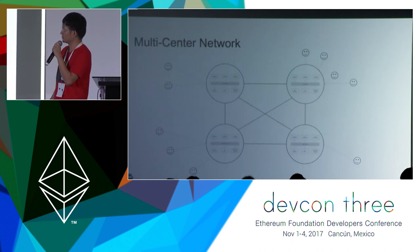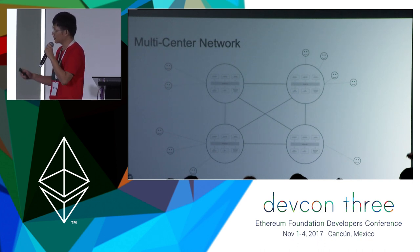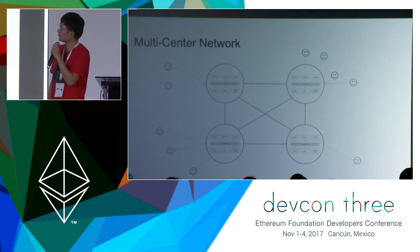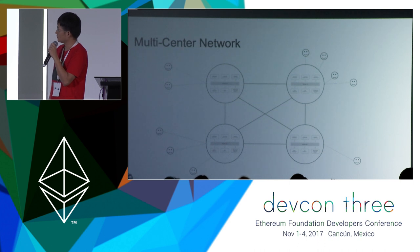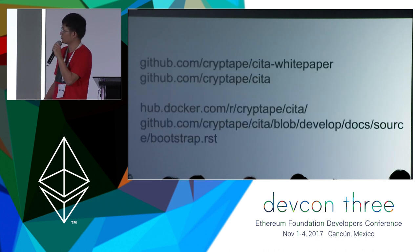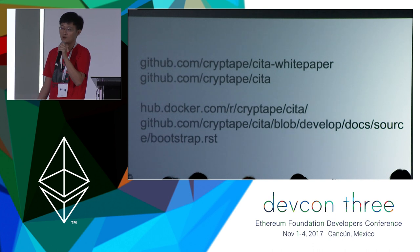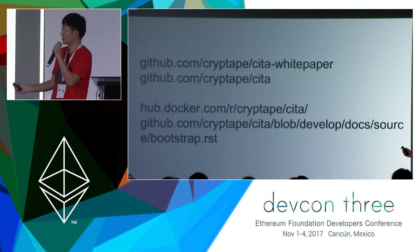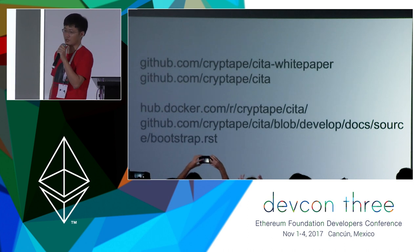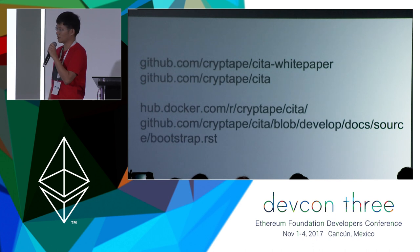This is a typical CIDA network. We build this network for enterprise users — each enterprise user can run a full node which includes many microservices, and their users can access the network through their full node. We think this hybrid model deserves more consideration and research, and we can build decentralized enterprise applications on this network. If you're interested, CIDA is fully open sourced. You can find the white paper, all the code, and we provide Docker images and a simple bootstrap document so you can follow the steps to run a CIDA network and benchmark it.